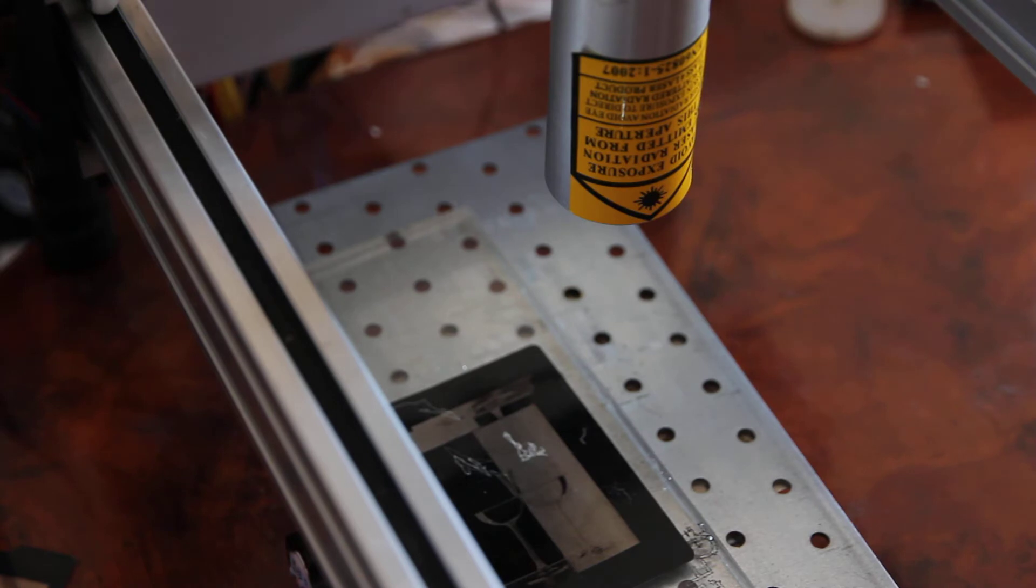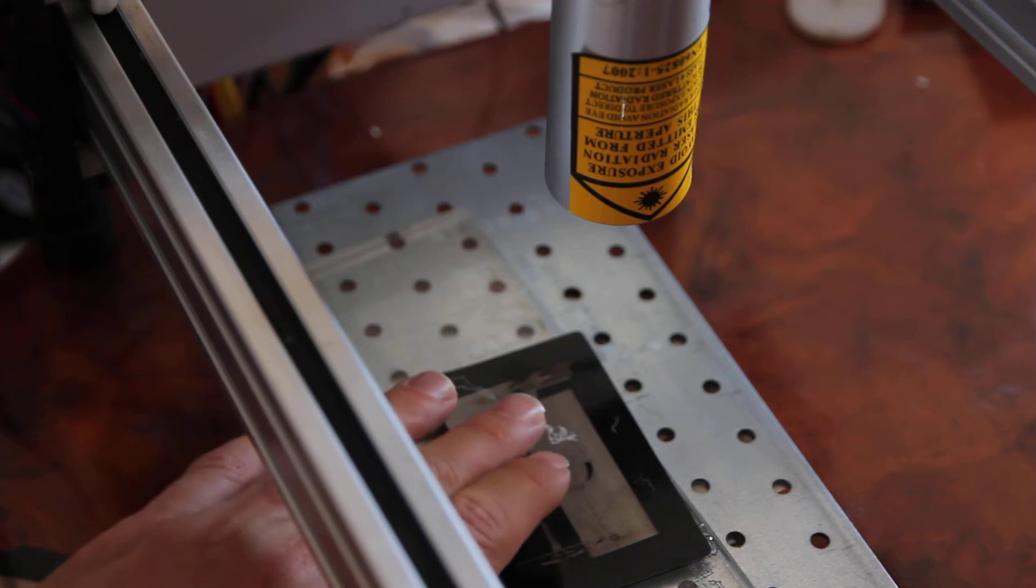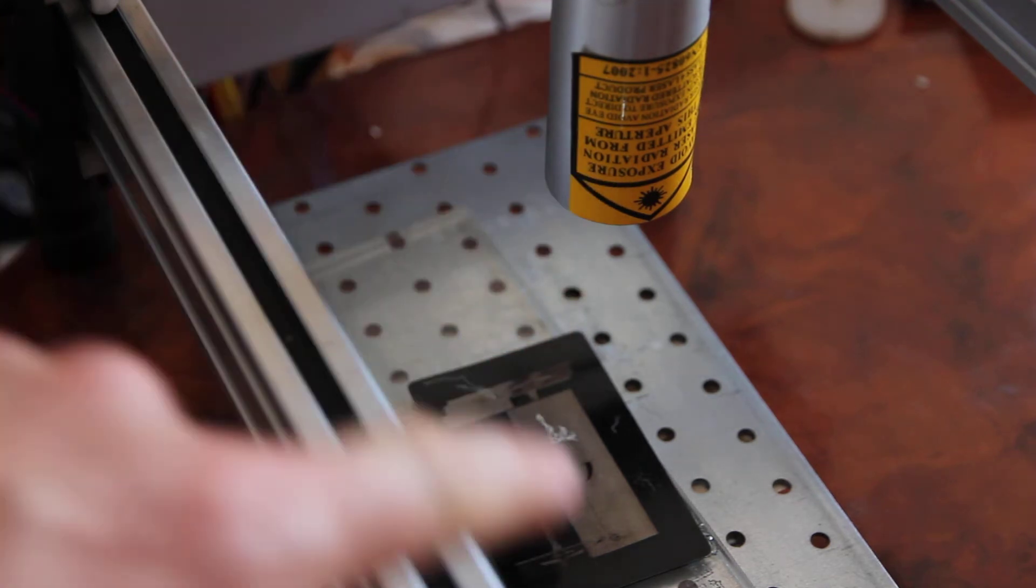Today I want to do an experiment and engrave on transparent acrylic without any hacks, using our 10 watt DPSS laser model. First of all we need to focus the laser and make sure that the beam is focused on the surface.